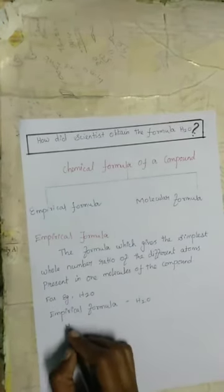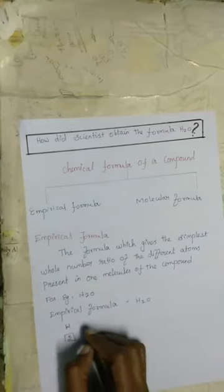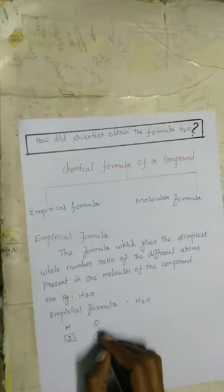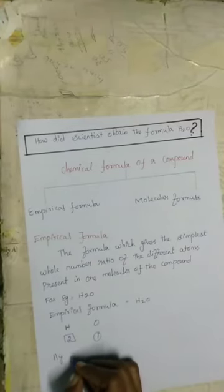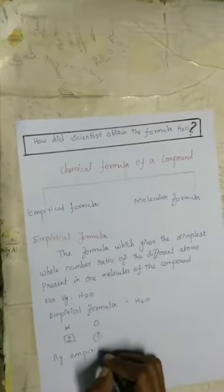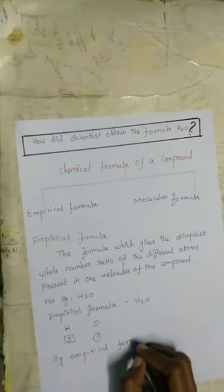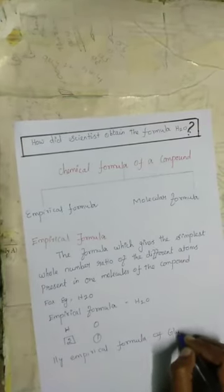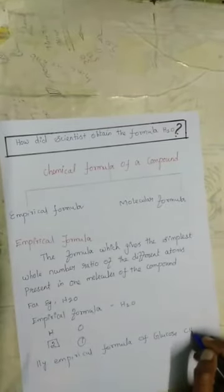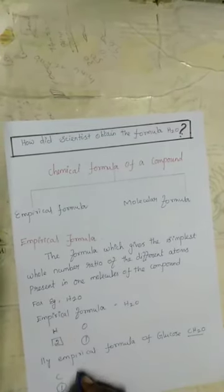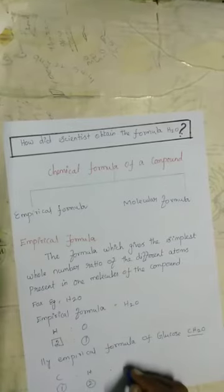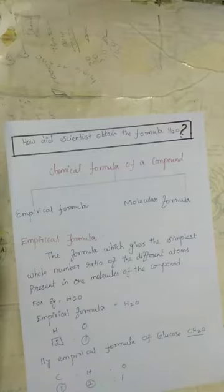Similarly, the empirical formula of glucose is CH₂O — carbon is 1, hydrogen is 2, and oxygen is 1. Note that the empirical formula only indicates the atomic ratio of the elements present in one molecule of the compound.